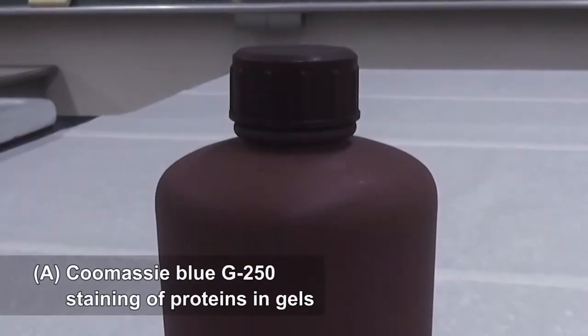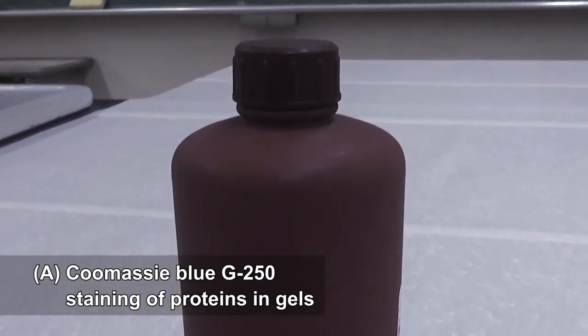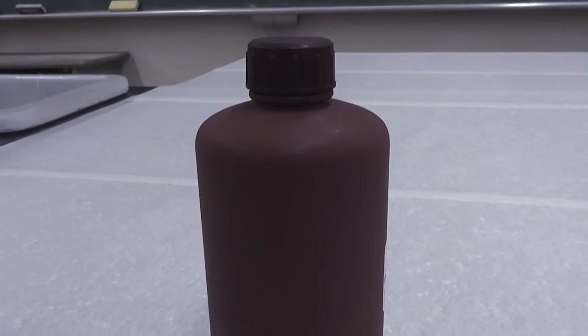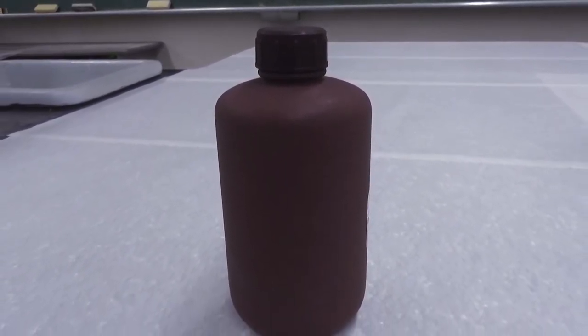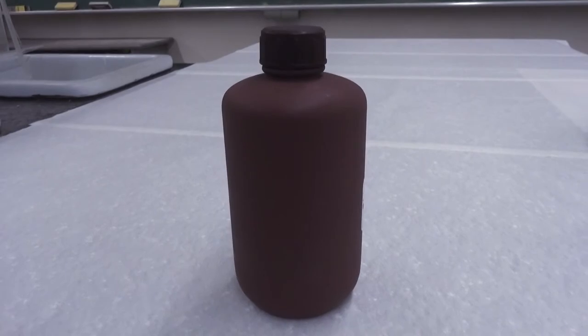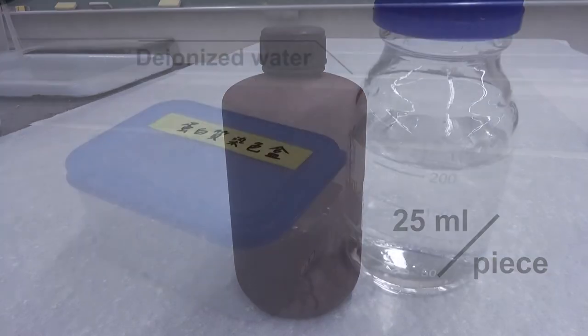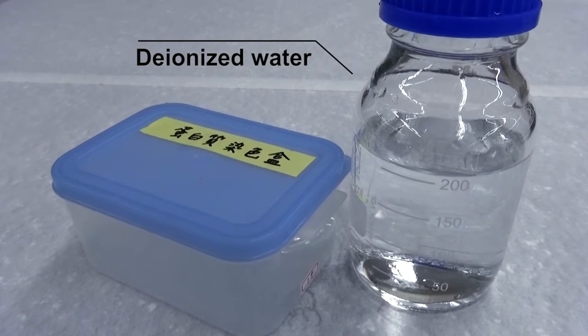A. Gel Staining Coomassie Blue G250 Staining of Proteins in Gels. Here we demonstrate the protocol of Coomassie Blue G250 staining. Please prepare the staining solution before disassembling the gel cassette sandwich. One electrophoresis mini gel will need 25 ml of staining solution. In addition, have the staining box and deionized water ready to use.